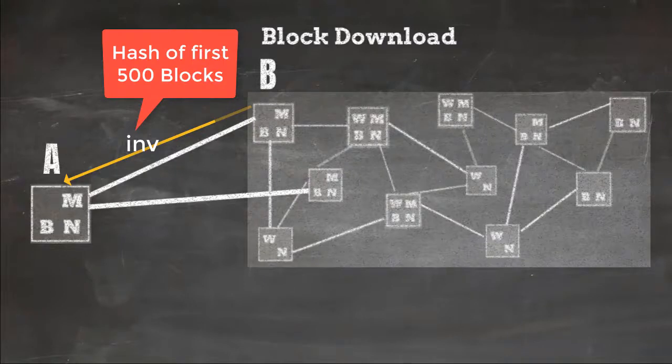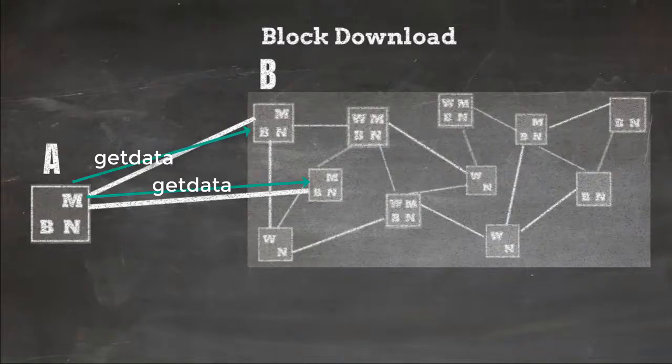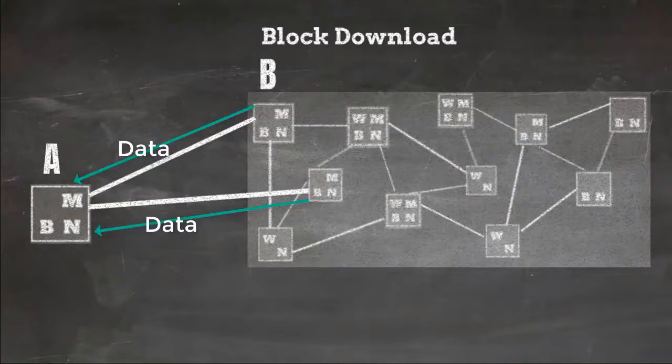When node A will get the hash of first 500 blocks, it will start sending get data messages with the hash of the block which it wants to get. So in this way node A will start building the chain of blocks.